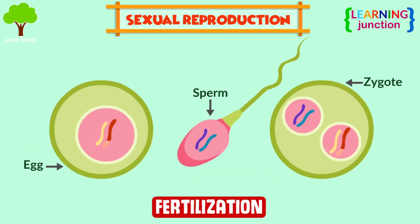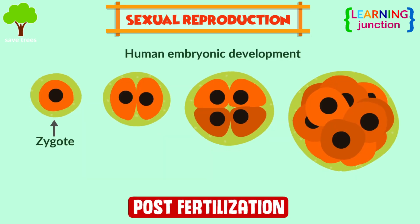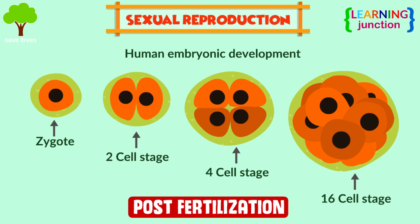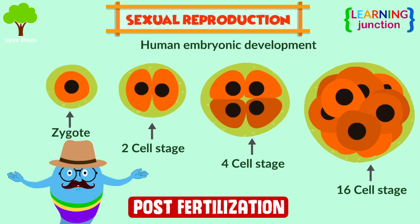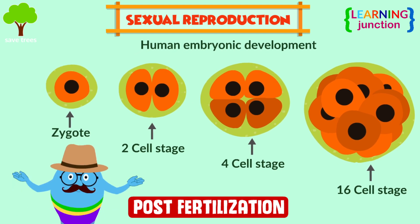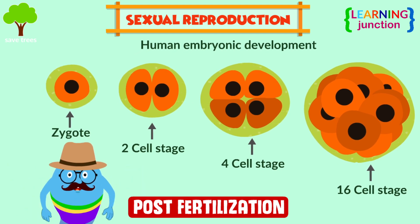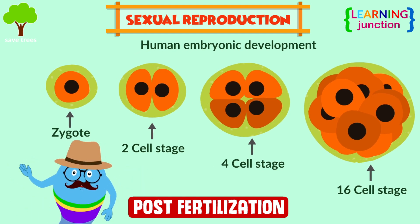Fertilization: once the haploid male and female gametes meet and fuse together to form a zygote, this is called fertilization. Post-fertilization: fertilization results in the formation of a diploid zygote, and the zygote divides mitotically and grows as an embryo.